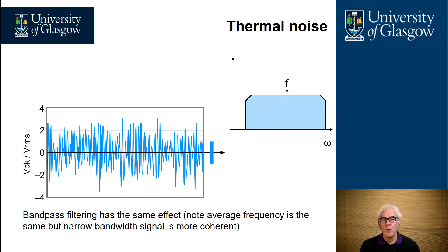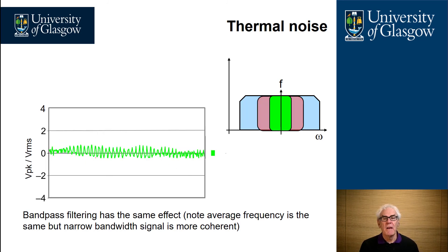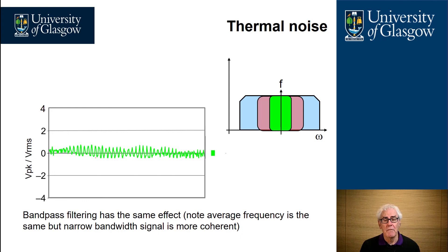Looking in more detail, here we have the peak voltage divided by the RMS voltage for the blue signal. If we change the bandwidth approximately four times, this gives the red signal, and eventually the green signal. At each point the mean frequency can be identical, but the noise is purely dependent on the bandwidth surrounding that frequency.